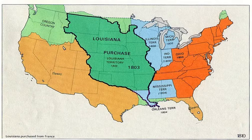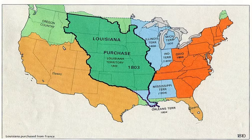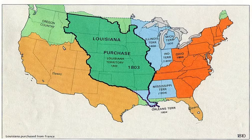Napoleon was willing to sell because his attempt to reinstate slavery in Haiti had failed by 1803, meaning the idea of using Louisiana as a base for supplying the Caribbean islands had become less relevant. More pressing was his need for money to fund the Napoleonic Wars — his attempt to subdue and unify the entire European continent under his rule. Just like Adams before him, Jefferson benefited from perfect timing in his negotiations with the French dictator. It turned out to be the single greatest achievement of Jefferson's entire eight years in office.